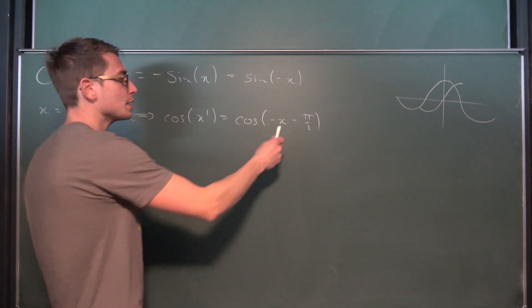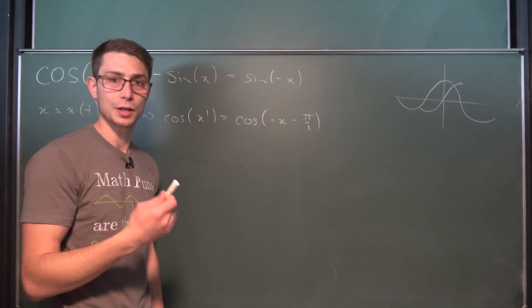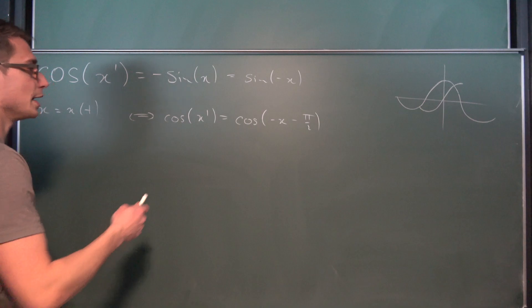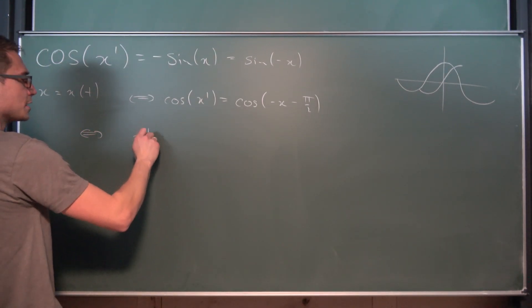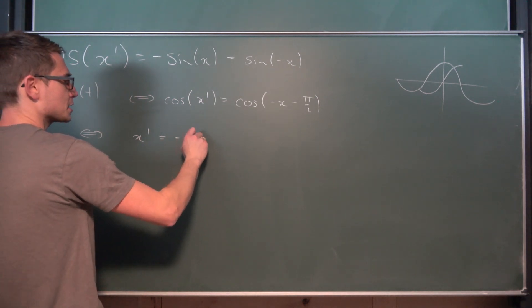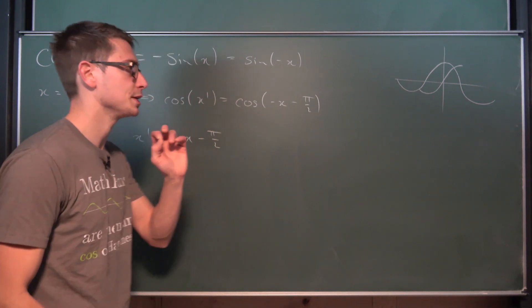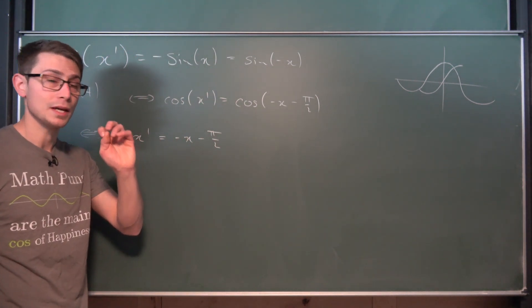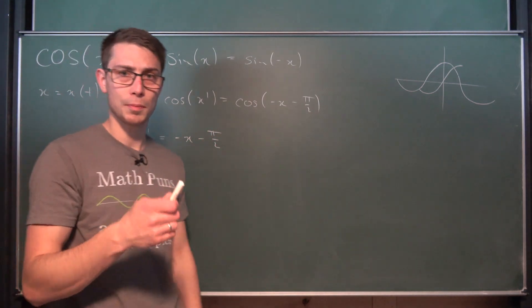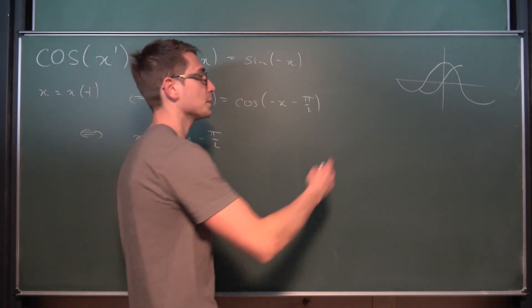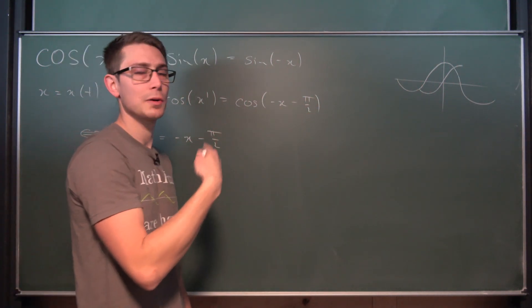Very cool. And as long as on this domain everything is bijective we can actually take a look at the inverse cosine and use it on both sides. So if you were to use the inverse cosine on both sides we are going to get that x prime is actually equal to negative x minus pi over two. But here's a little something that you really need to consider.